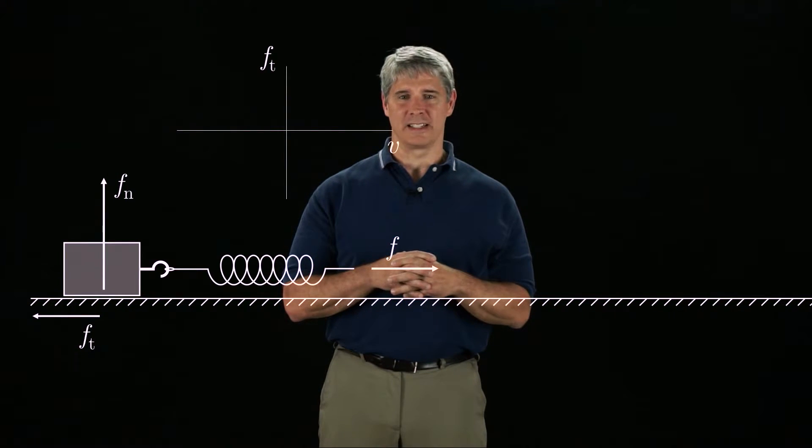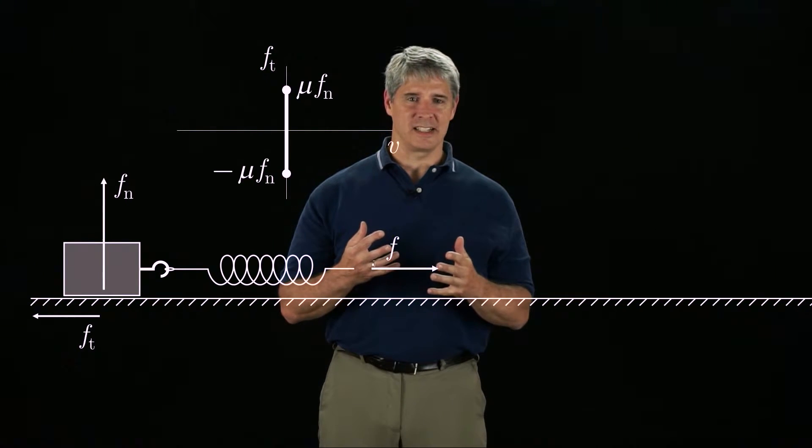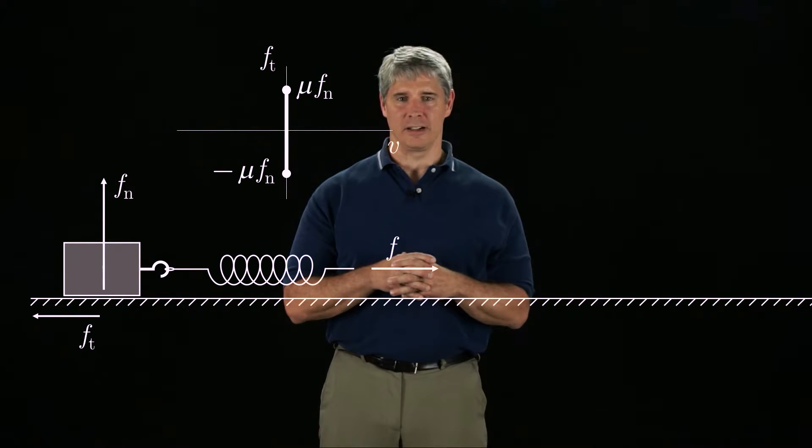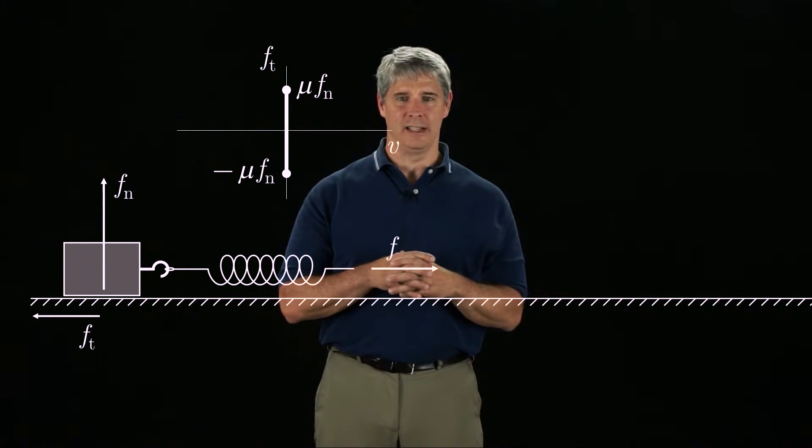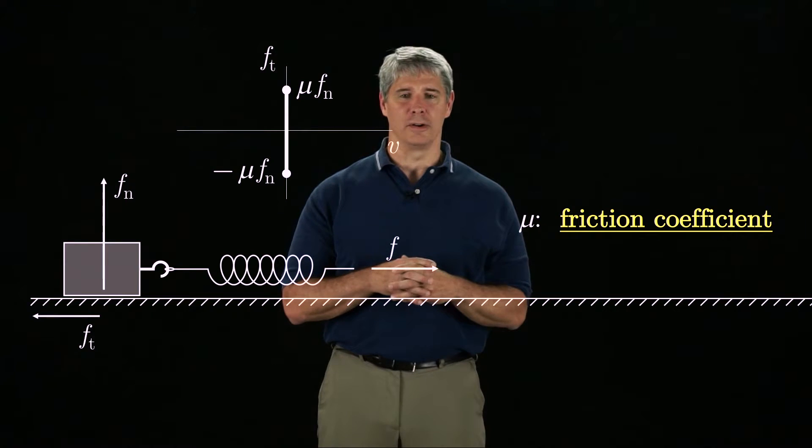Let's plot the friction force Ft as a function of the block's sliding velocity V. When the velocity is zero, the friction force Ft could be anywhere in the range minus mu Fn to mu Fn, where mu is called the friction coefficient.